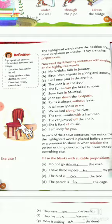The definition of prepositions: a preposition shows the relationship between two things. Prepositions of location include on, under, in, at. Prepositions of timing include before and after. Prepositions of direction include from, towards, and to.